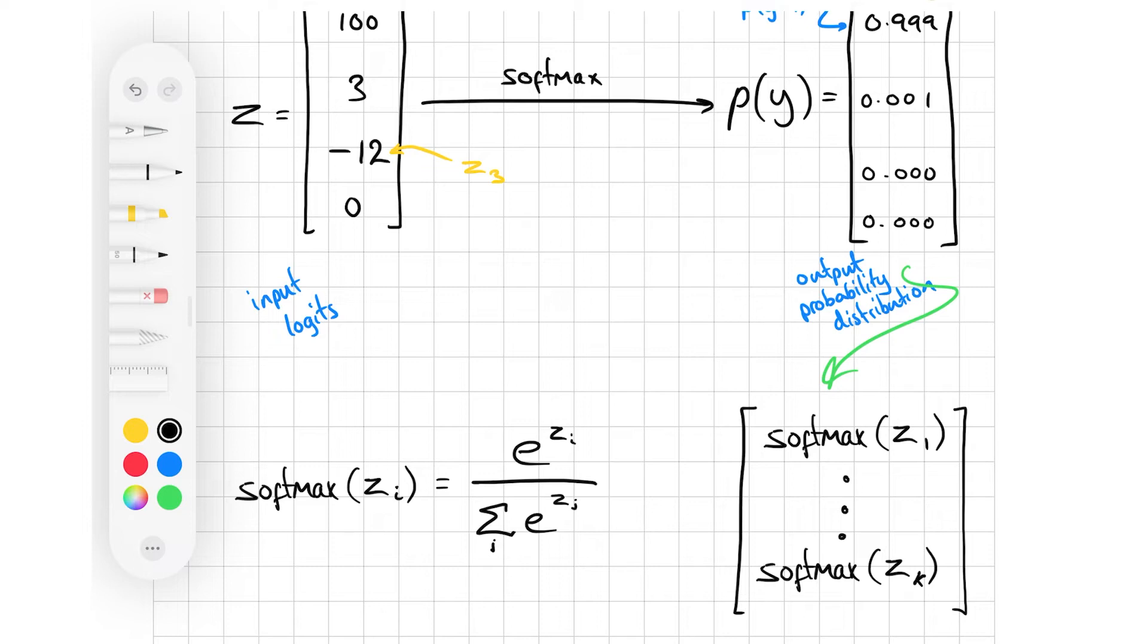It's easy to define the softmax by writing down the function that it performs on one particular element, like I've done here. That's just for one particular element of the input vector. But for shorthand, you'll often see it applied to a vector. And that's what I've got there.